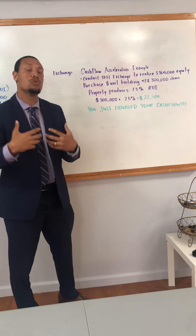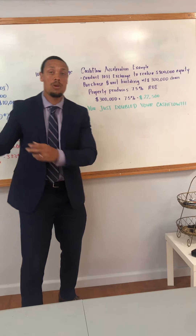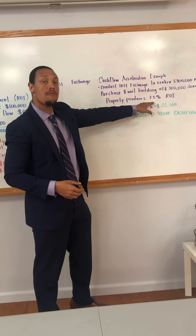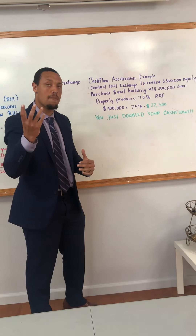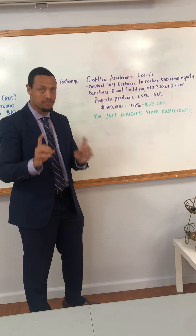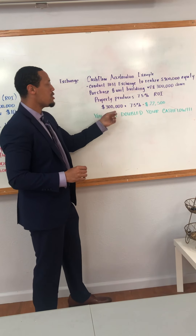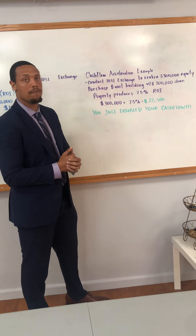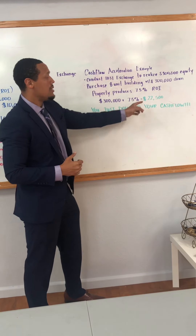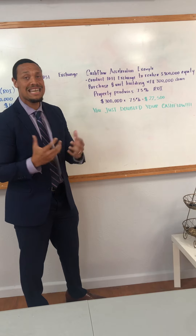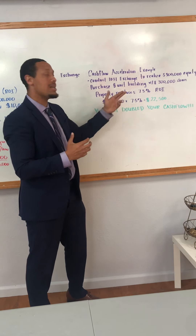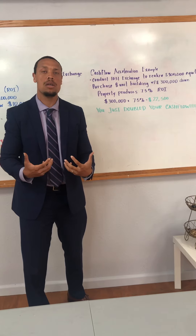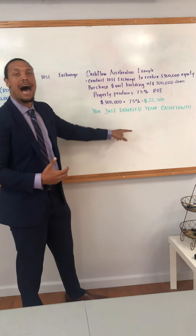That eight-unit building now produces only 7.5% return. Remember, in this example my return was 10%, but because the market has gone up, now it's only 7.5% — your returns are typically less when the market goes up. Some people say, well, why would I sell? Check it out: I took $300,000 of equity to buy this eight-unit building, and that's giving me 7.5% cash on cash — that's pretty achievable today. That would be $22,500 net. So even though I went down on my percentage from 10% to 7.5%, I went from making $10,000 a year to making $22,500. I just doubled my cash flow.